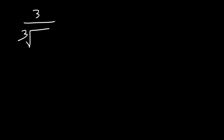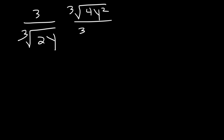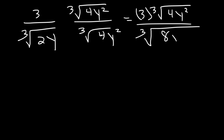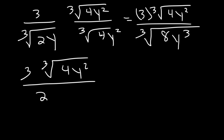Try this one: 3 divided by the cube root of 2y. We're going to multiply the top and the bottom by the cube root of 4y squared. On the bottom, 2 times 4 is 8, and y times y squared is y cubed. The cube root of 8 is 2, and the cube root of y cubed is y. And so that's the solution.